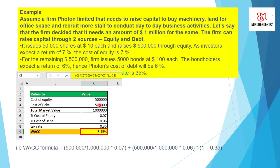The cost of equity is $500,000 and the cost of debt is $500,000, so the total market value of the investment becomes $1 million. Cost of equity is 7%, cost of debt is 6%, and the tax rate is also given. Applying the WACC formula, the result comes to 5.45% WACC. This is the way we solve WACC problems.